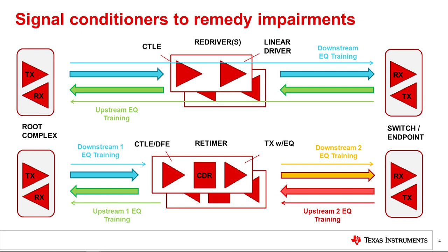This effectively doubles the maximum link attenuation of the standard. It accomplishes this feat by utilizing a Clock and Data Recovery System, or CDR, which resets the jitter budget, and by performing adaptive equalization, meaning it automatically applies equalization based on the characteristics of the channel.